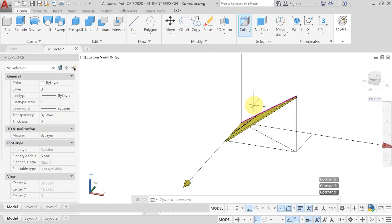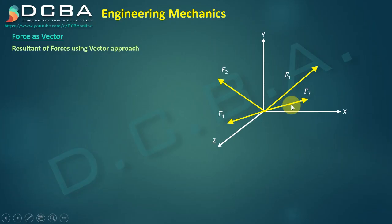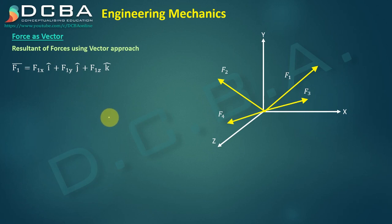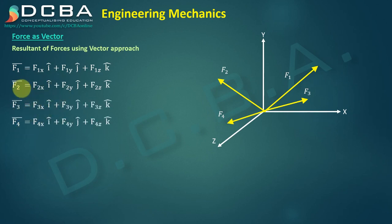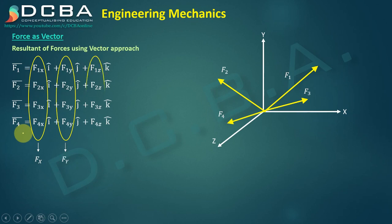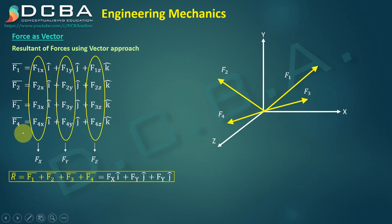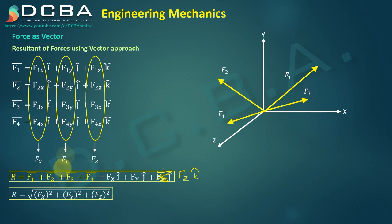So now we understand how the resultant is inclined with respect to the X, Y, and Z axes. To find the resultant in 3D using the vector approach, simply add all the vectors. Represent F1, F2, F3, F4 in vector form and the resultant R = F1 + F2 + F3 + F4, giving ΣFX·î + ΣFY·ĵ + ΣFZ·k̂. The magnitude is the square root of (ΣFX)² + (ΣFY)² + (ΣFZ)².